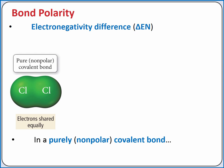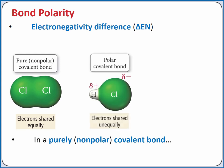This is the case for a chlorine molecule, Cl2. If there is an intermediate difference in electronegativity, we'll have a polar covalent bond, where there is a partial negative on the more electronegative atom and a partial positive on the less electronegative atom.